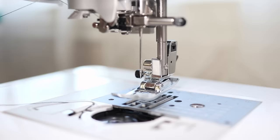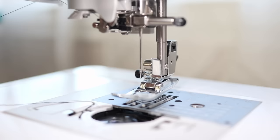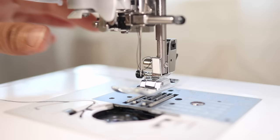Bring the thread down to the needle and secure in place behind the little hook. Then all you have to do is thread your needle. You can do it by hand or if your machine has an automatic needle threader you can use that as well.